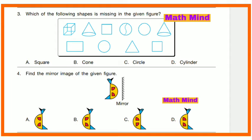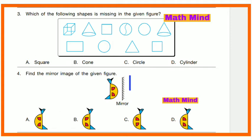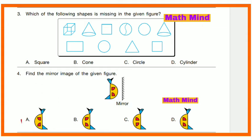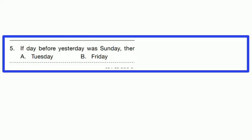Question No. 4: Find the mirror image of the given figure. The mirror is placed vertically, so the figure will be formed on the other side. Regarding this shape, Option A is correct.